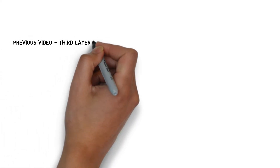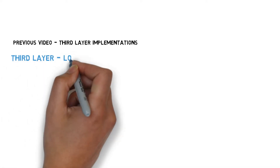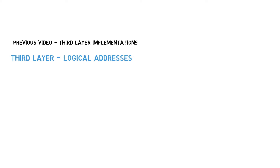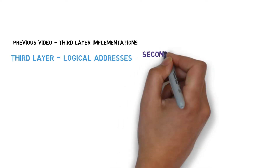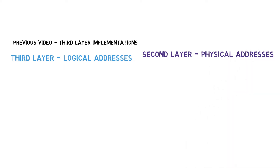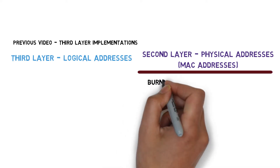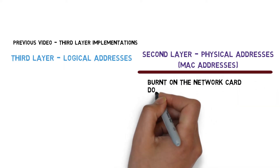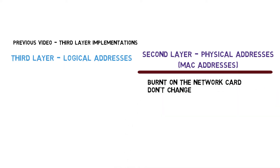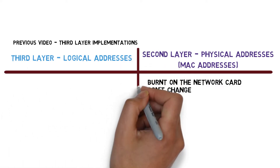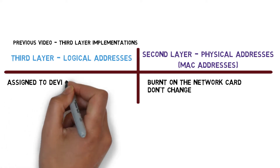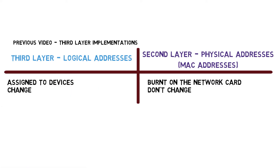In the previous video, we considered three possible implementations for the third layer. We mentioned that at least in some implementations, packets in the third layer carry addresses, specifically logical addresses. When we talked about the second layer, we talked about physical addresses called MAC addresses, which are burnt on your network card and do not change throughout the device's life. Logical addresses, by contrast, may change and are assigned to devices rather than burnt on them, so a single device may have one logical address today and another one tomorrow.